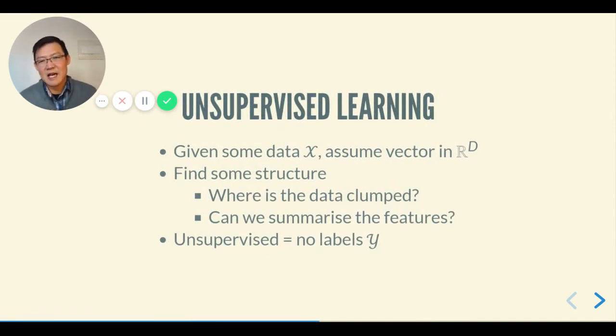I'm going to change gears quickly and talk about unsupervised learning. Unlike supervised learning, we don't have labels in unsupervised learning. So we're given some data X, which we, again, assume to be a vector, a D-dimensional vector, and we want to find some structure. The kinds of structure we want to ask is things like, where's the data clumped, or can we summarize the features?